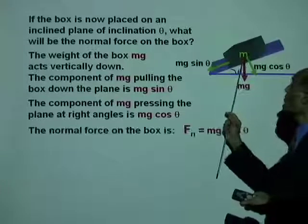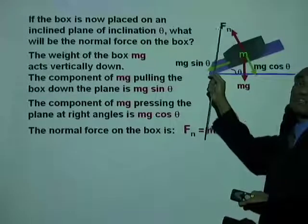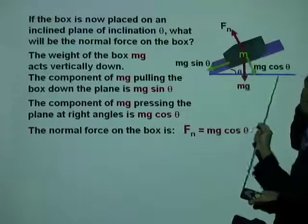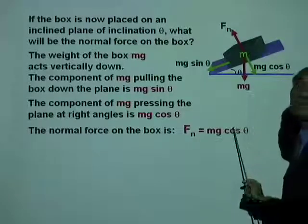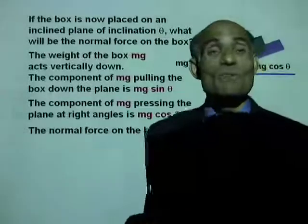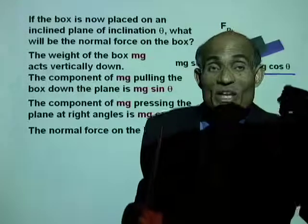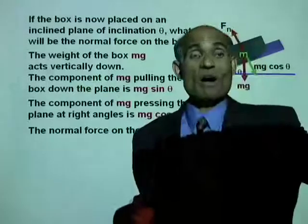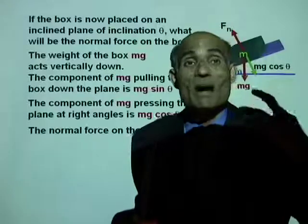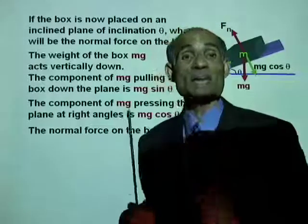And the component of mg pressing the two surfaces together is mg cos theta, and this is the normal force. The normal force between the two surfaces, Fn, equals mg cos theta. So wherever we use Fn so far, we need to replace that Fn by mg cos theta.